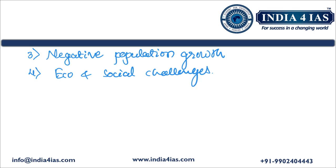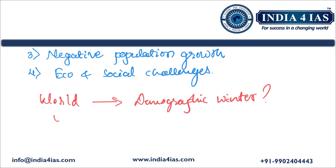Is the world moving towards demographic winter? Yes — features of demographic winter are being witnessed in developed countries and some emerging economies, while other regions continue to experience population growth. In Europe, countries like Italy, Germany, and Spain are experiencing negative population growth due to declining birth rates and an aging population. Italy's fertility rate has been consistently below 1.5 children per woman.